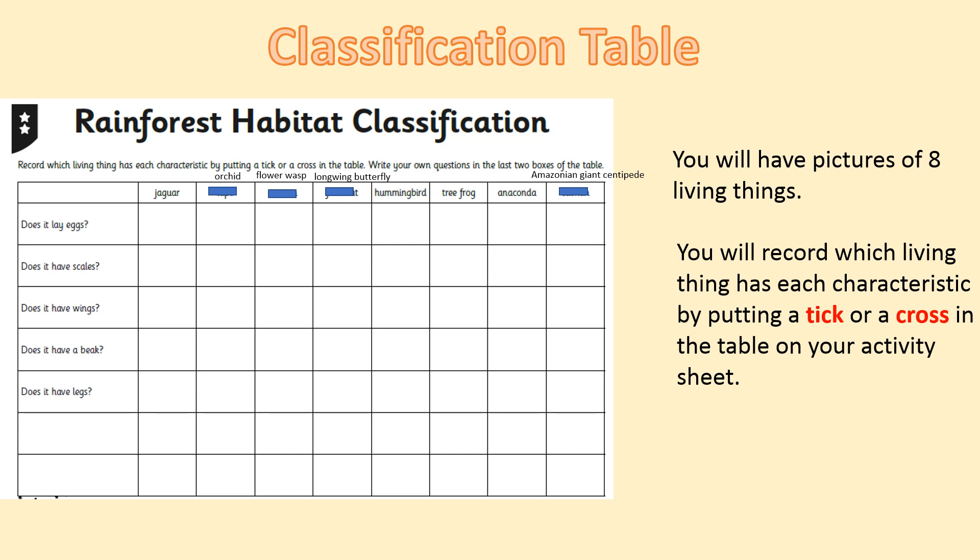We have a rainforest habitat classification — all of these animals and plants live in the rainforest. Record which living thing has each characteristic by putting a tick or a cross in the table, and then write your own questions in the last two boxes. We have the jaguar, orchid, flower wasp, long-winged butterfly, hummingbird, tree frog, anaconda, and Amazonian giant centipede. You'll be given pictures of these living things so you can see how they look and notice any characteristics they may have.